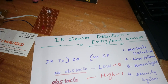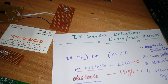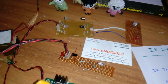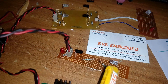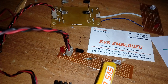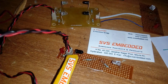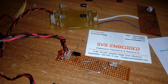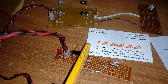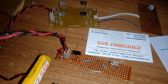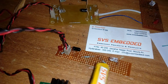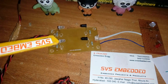We can go for applications like obstacle detection, line follower, room light counter, or security system. Here I am using one IR transmitter — the IR LED — and a photodiode IR receiver. If any obstacle is detected, that light should be on. Here the light is on.